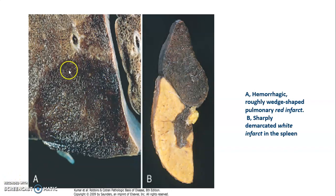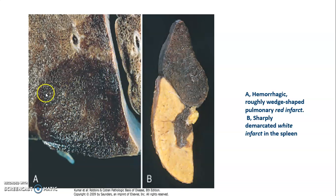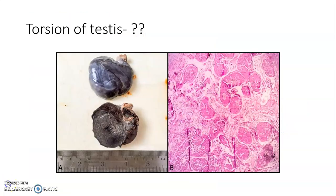Picture A shows a hemorrhagic infarct of the lung, which is roughly wedge shaped. This is a gross picture of the testis showing torsion, and this is a microphotograph showing coagulative necrosis of testicular parenchyma — this is a red infarct.